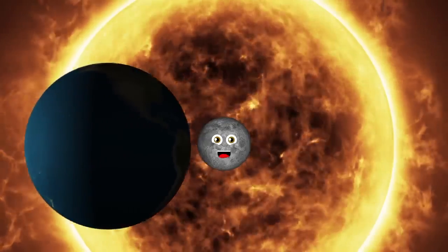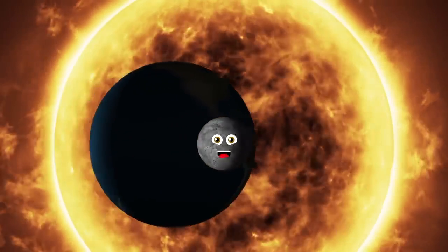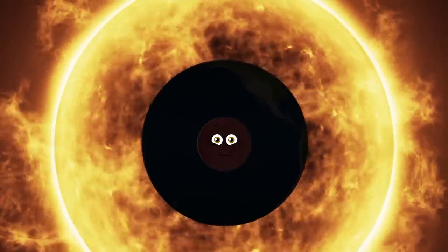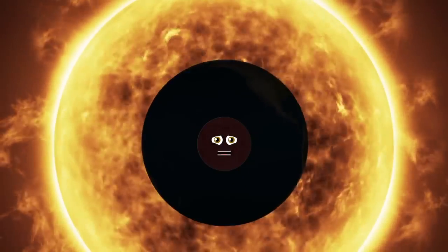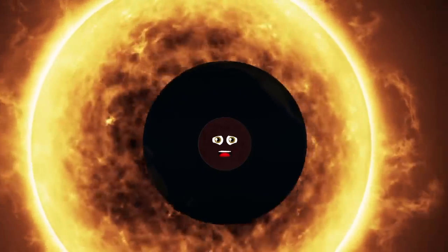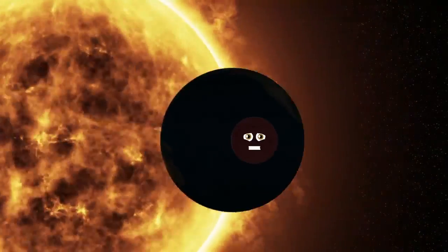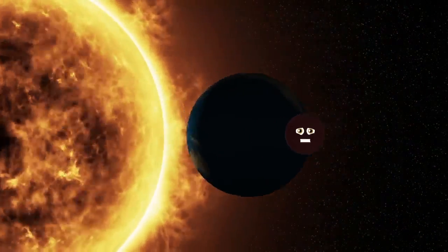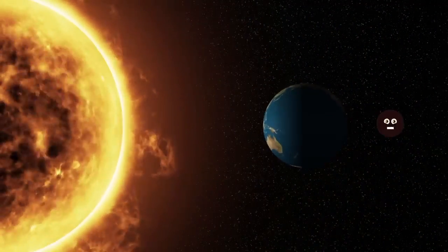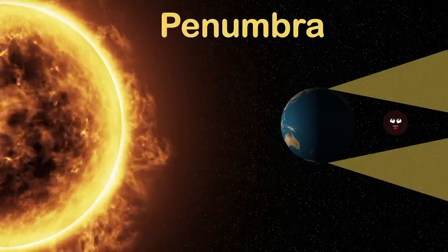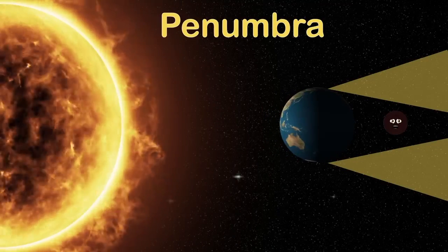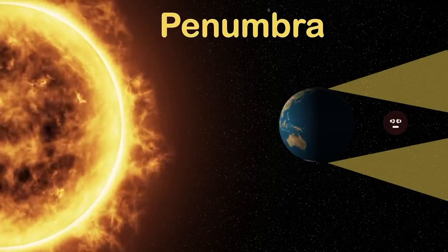It's when the earth passes between the moon and sun like this. When the sun hits the earth, the earth casts a shadow upon me. We'll learn about the shadows' names and the stages of the eclipse. You will see the penumbra — a partially shaded outer region of the shadow.